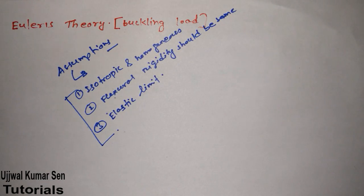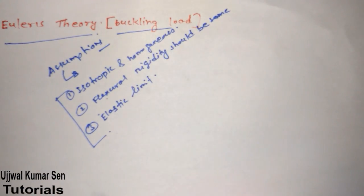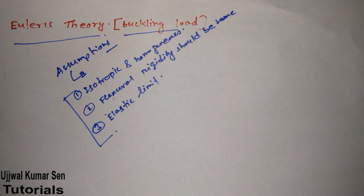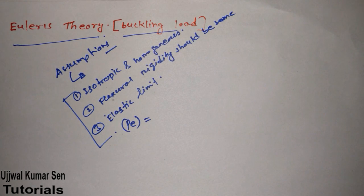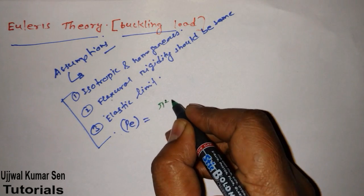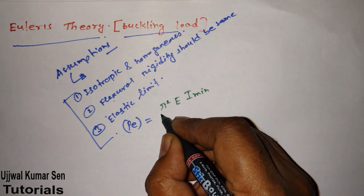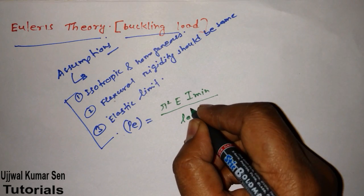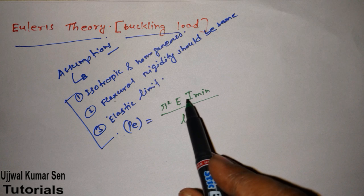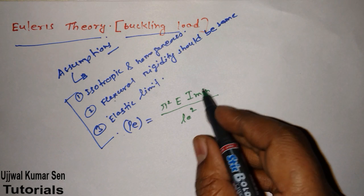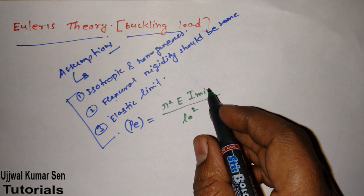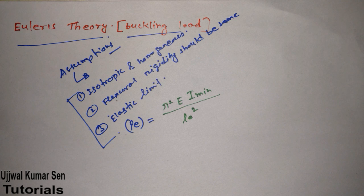These three are the most important assumptions for Euler's theory. Now, the most important concept is buckling load, denoted by Pe. The formula is Pe = π²EI / Le², where Pe is the buckling load, π is 3.14, E is Young's modulus of elasticity, I minimum is the minimum moment of inertia, and Le is the effective length.